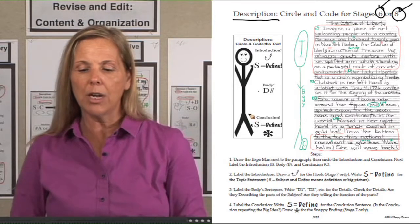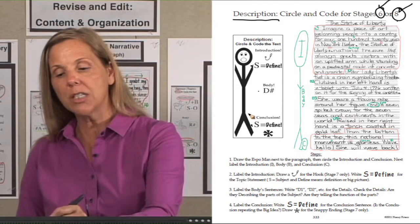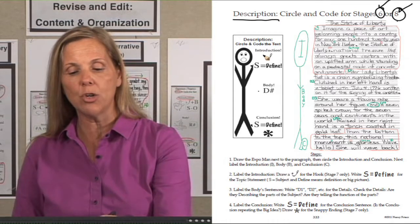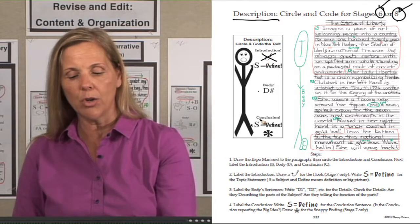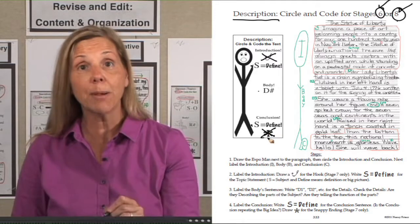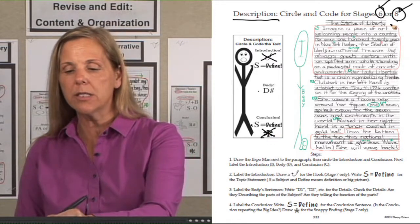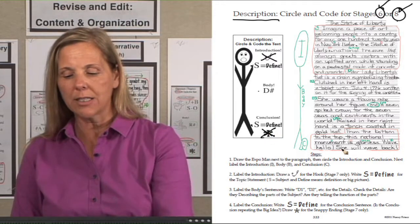So if I were in stage six and did not have hook or snappy ending, what would we do? We would cross out the hook and snappy ending with pencil. Notice, this actually has a hook and a snappy ending.